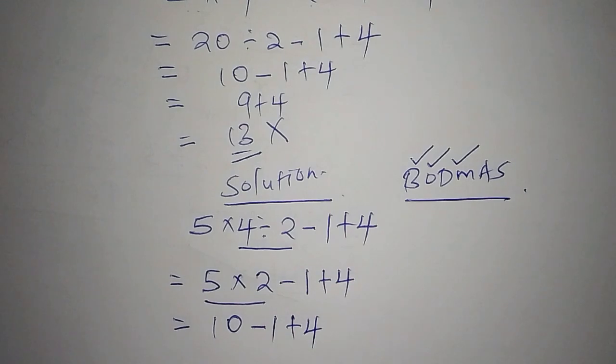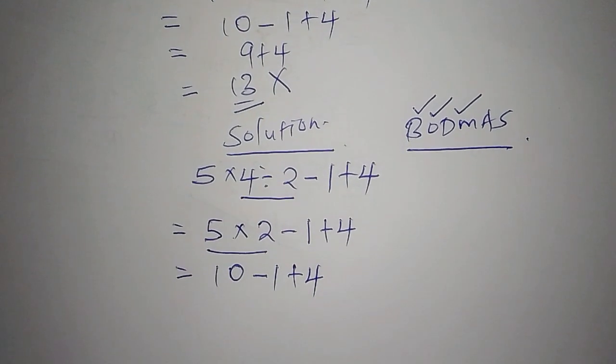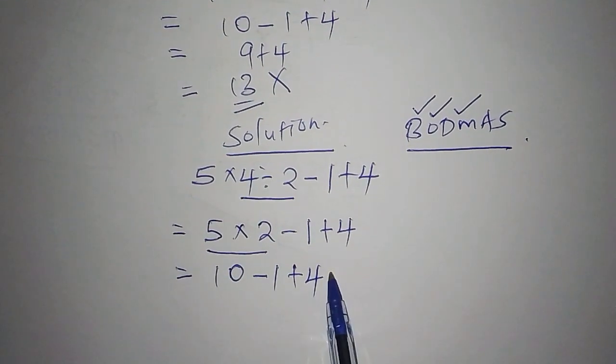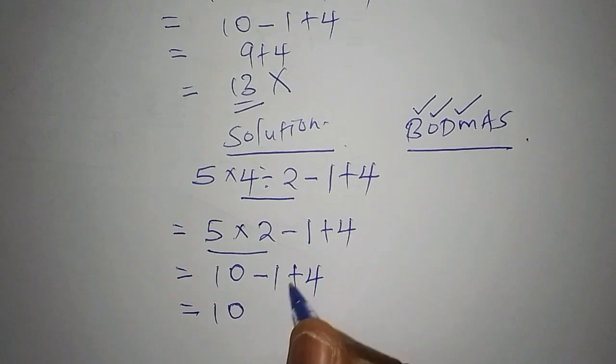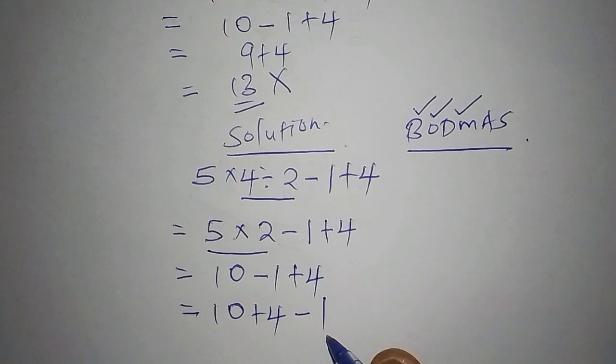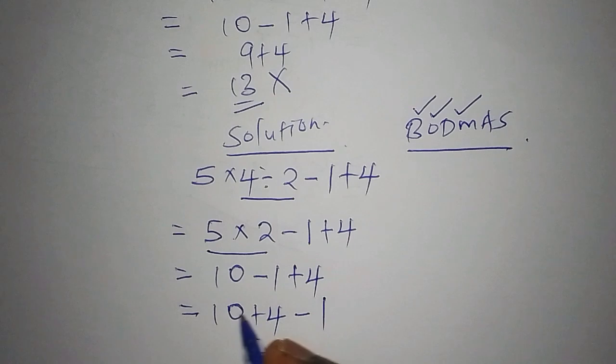Once we've reached this step, now we are supposed to arrange these operations in the correct order, starting with the addition. We shall have 10, then add to 4, subtract from 1. After we shall have arrived this way, we shall start with the addition.